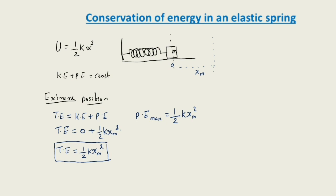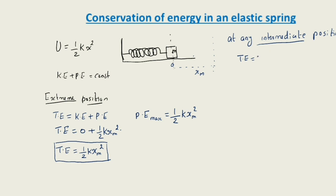Now let's discuss at any other point — other than the mean position and extreme position. Consider the body somewhere in between. Using conservation of energy: total energy equals kinetic energy plus potential energy at that point. We write total energy equals half into m into v square, where v is the speed at that point, plus half into k into x square, where x is the displacement at that particular point.